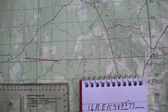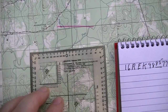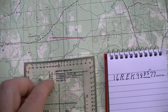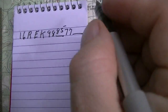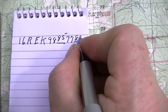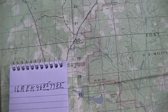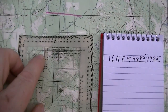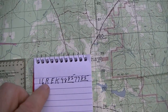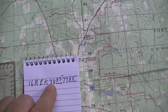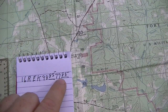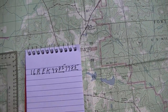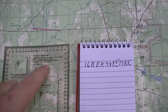Now I'm going to read up — and that one is also 8-5, just by luck. So the full map coordinate of that little house right there is: 16 Romeo, Echo Kilo, 9-8-8-5-7-7-8-5. That's the map coordinate you would give me, and then I would translate it onto my map.